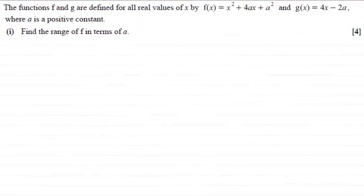Hi. Now in this question we've got to find the range of a function. We're given the functions f and g are defined for all real values of x by f(x) equaling x squared plus 4ax plus a squared, and g(x) equaling 4x minus 2a, where a is a positive constant. And we've got to find the range of f in terms of a.